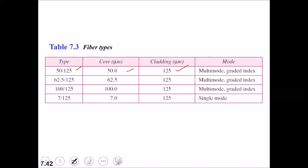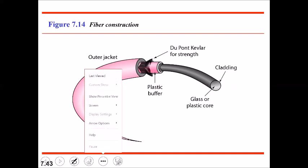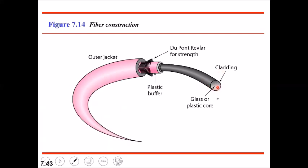Looking at the construction of fiber optic cables: at the heart you have a glass or plastic core, and this core is surrounded by a cladding. Both the core and cladding are made of glass, except the core is of higher density and the cladding is made of glass of lower density.